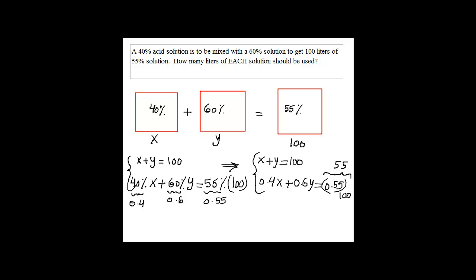You can use substitution method if you like or addition method. If you use substitution method, you can take the first equation and solve x in terms of y. So if I just copy this here, x plus y equals 100, then here we have 0.4x plus 0.6y equals 55.